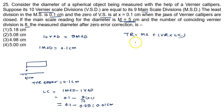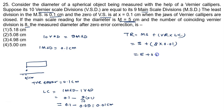Substituting all values: main scale reading is 5 cm, Vernier reading is 8, least count is 0.01. So total reading equals 5 plus 8 × 0.01, which gives 5 plus 0.08, equal to 5.08 cm.